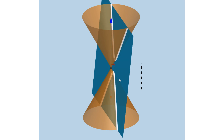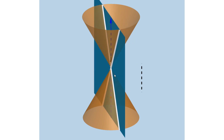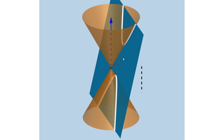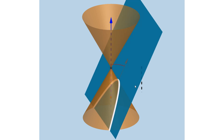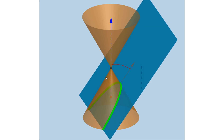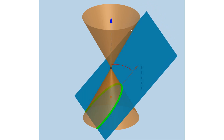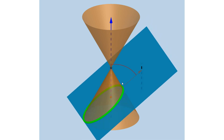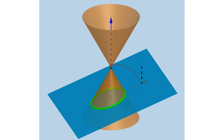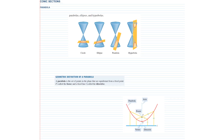We get a pair of straight lines in one position. Starting from a hyperbola, the moment this plane becomes parallel to the crossed edge of the cone, we get a parabola. In all other cases we get an ellipse, and the moment this plane becomes perpendicular to the axis of the cone, we get a circle.